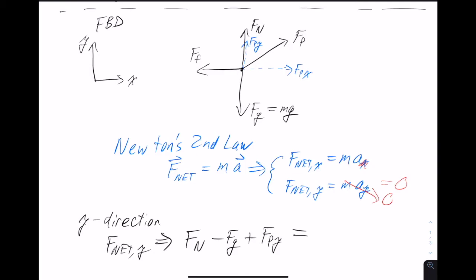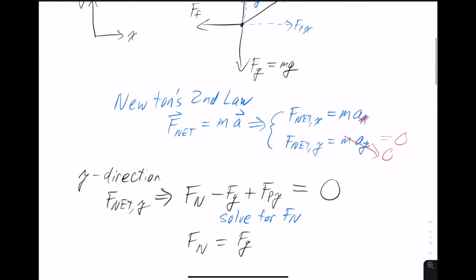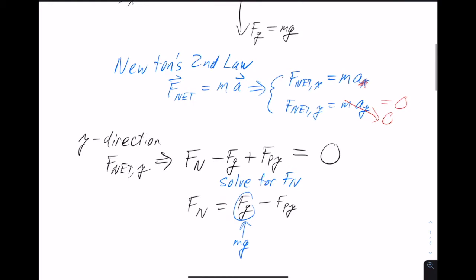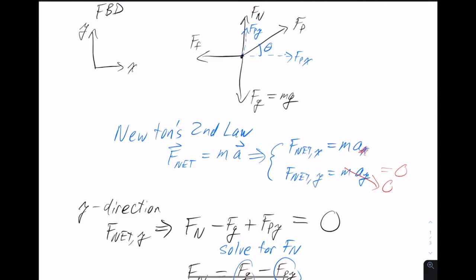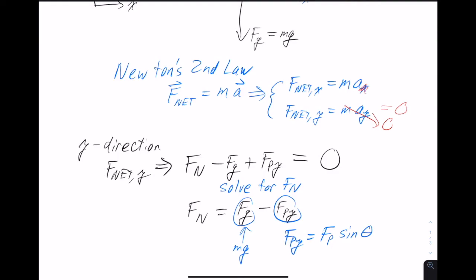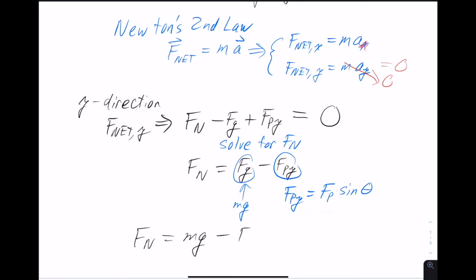Setting the y-direction equation equal to ma in y, which is zero, then solving for the normal force: normal force equals the force of gravity minus the y component of the pulling force. The force of gravity is just mg. For the y component of the pulling force, using trig — the x side is adjacent, the y component is opposite — so fp sub y equals fp times sine of theta. Therefore, normal force equals mg minus fp times sine of theta.